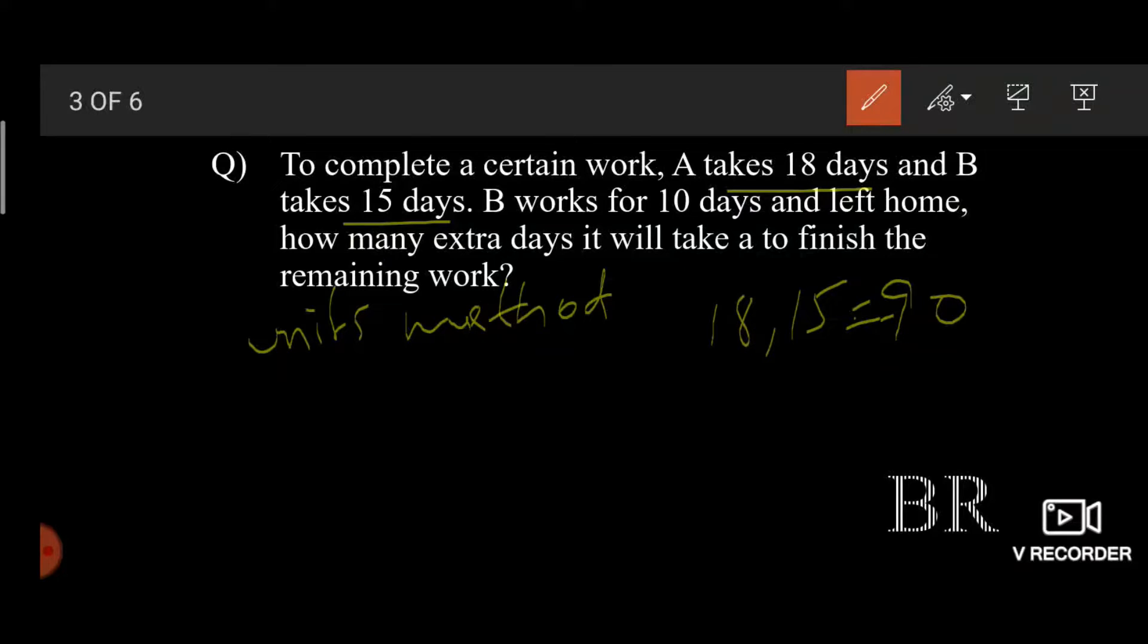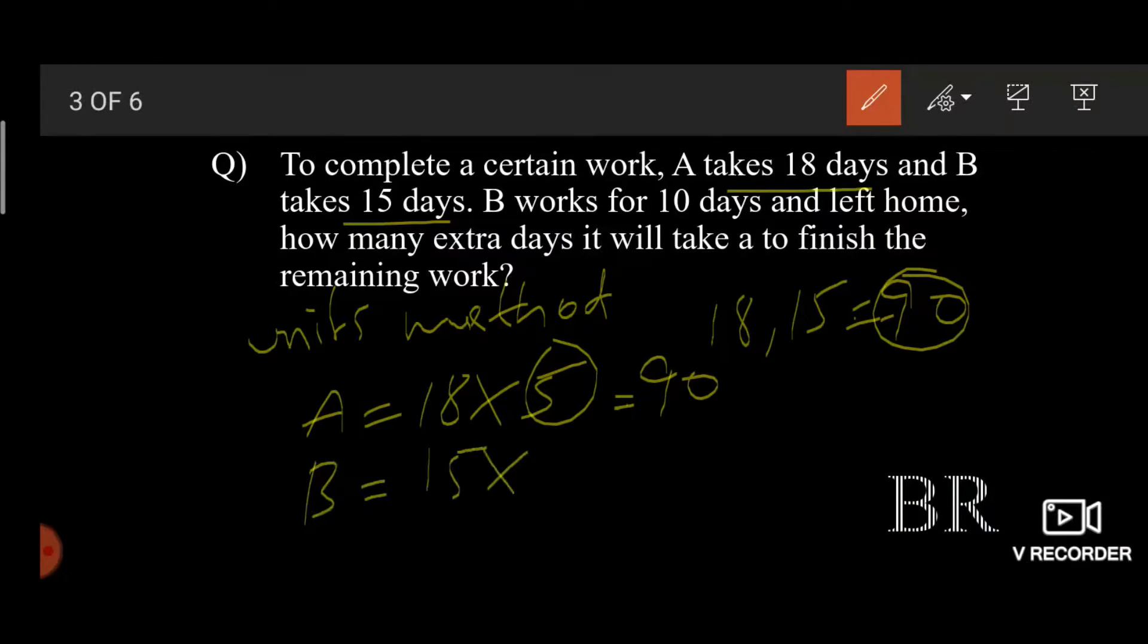Say for instance, they are making 90 doughnuts. Here A takes 18 days, which means A makes 5 doughnuts a day. At the end of the 18th day, he makes 90 doughnuts. And B takes 15 days with each day 6 doughnuts, and at the end of the 15th day he makes 90. A makes 5 units a day, that means 5 doughnuts a day. B makes 6 doughnuts a day. Remember this data.